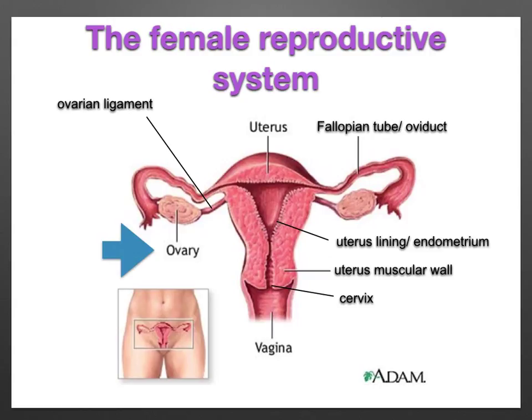Looking at the female reproductive system, you've got the ovaries, and these are about the size and shape of a large almond. They're situated in the abdominal cavity and held in position by the ovarian ligaments.